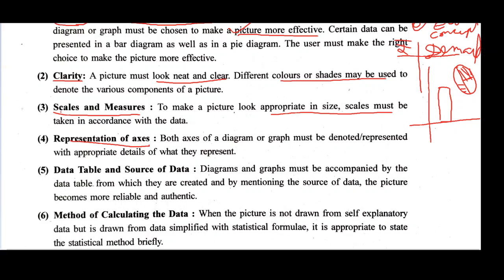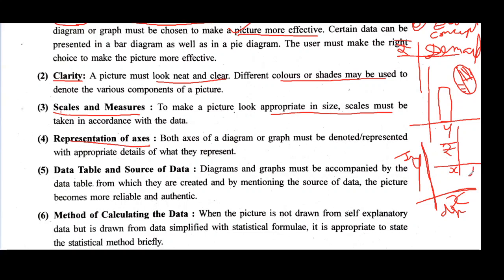The fourth aspect is representation of axes. You must indicate what is represented on the X axis and what is on the Y axis. In 11th standard economics, you learned that the X axis has the dependent variable and the Y axis has the independent variable. If you draw a price and demand diagram without labeling the axes, the graph or diagram is useless.